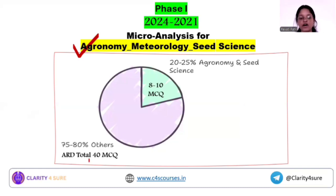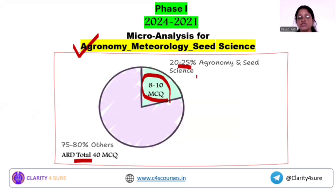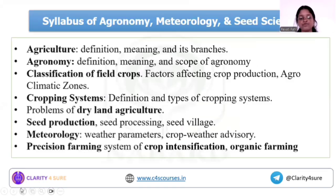In ARD, we have to attempt around 40 MCQs, and out of 40 MCQs you can expect around 8 to 10 MCQs — that is around 20 to 25 percent weightage from this part of the syllabus. So yes, this is a major and important part of the syllabus.